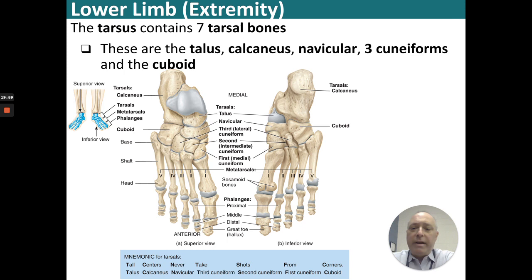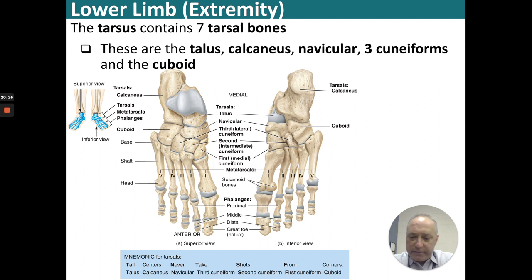Getting to the foot region, we have the tarsus with seven tarsal bones: the talus, calcaneus, navicular, three cuneiforms, and the cuboid. A mnemonic for this is: 'Tall centers never take shots from corners' — talus, calcaneus, navicular, third cuneiform, second cuneiform, first cuneiform, and cuboid. This is an inferior view of the calcaneus showing the ball of the foot and the cuboid.